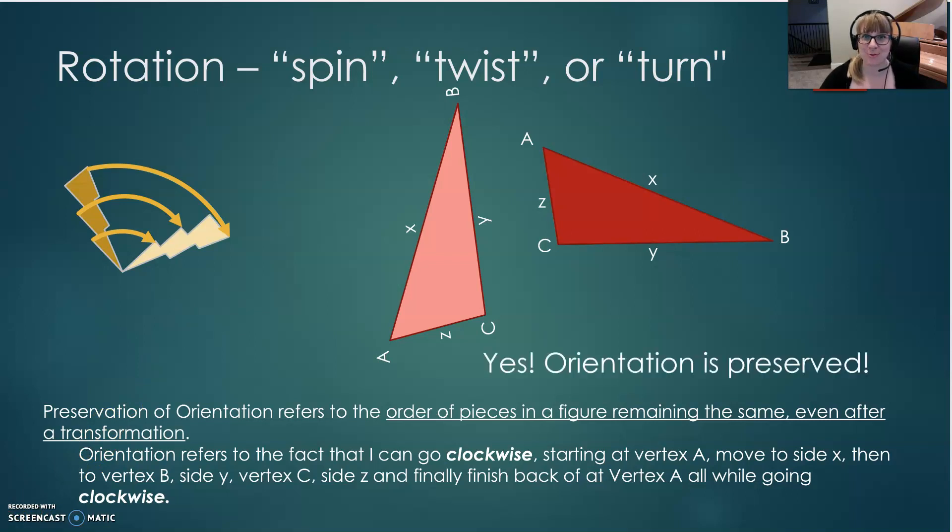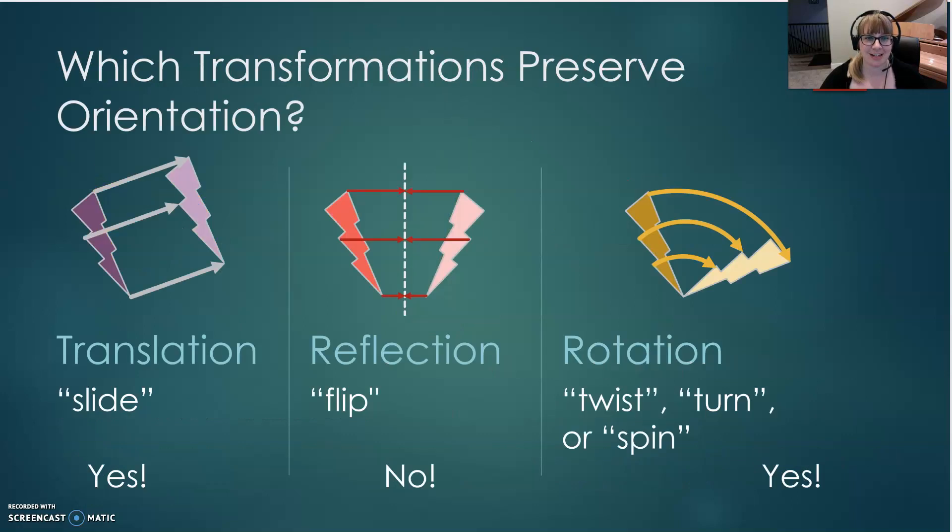So, how did you do? Did you guess correctly? Here's our summary. A translation, yes, it does preserve orientation. A reflection does not preserve orientation. But a rotation does preserve orientation. That's it for today, guys. Thanks for watching. We'll see you next time.